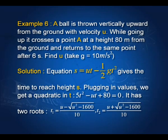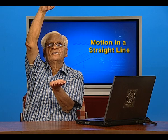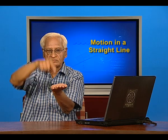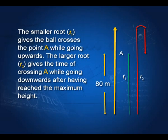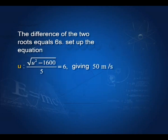Example 6: A ball is thrown vertically upwards from the ground with velocity u. While going up, it crosses point A at a height of 80 meters and returns to the same point after 6 seconds. Using the quadratic in t, you get two values — one for the ball reaching height A on the way up, and one for the ball going to maximum height and coming back down to point A.